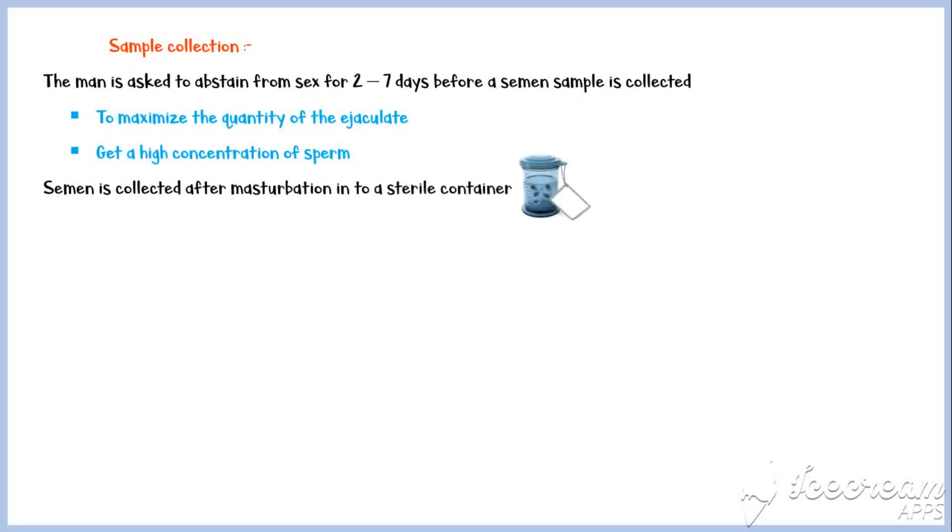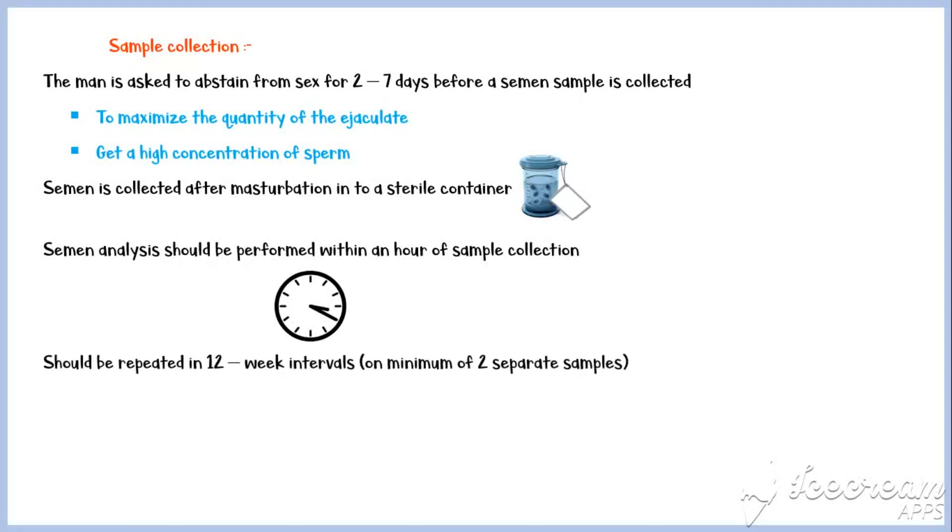Semen is collected after masturbation into a sterile container. Semen analysis should be performed within an hour of sample collection and should be repeated in 12-week intervals on a minimum of two separate samples.